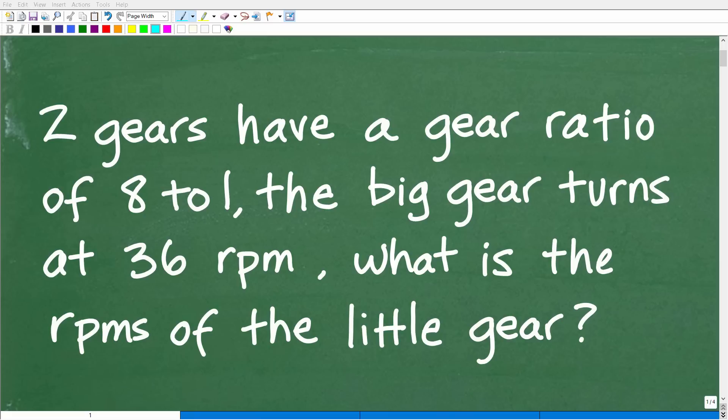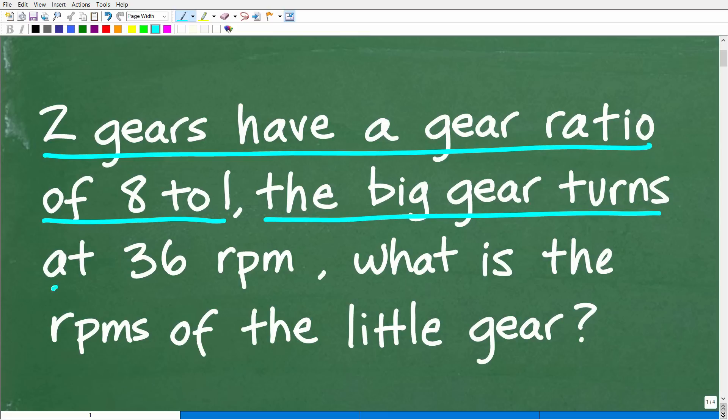Get ready to put your math skills to work to solve this interesting math word problem. Let me read the problem. Two gears have a gear ratio of 8 to 1, the big gear turns at 36 RPMs, what is the RPMs of the little gear? If you can figure this out, go ahead and put your answer into the comments section. I'll share the correct solution in just one second and fully explain how to solve this problem.